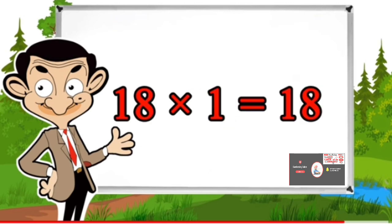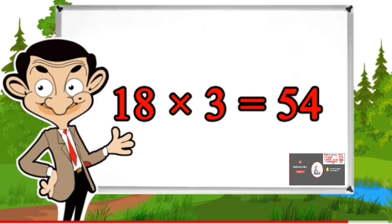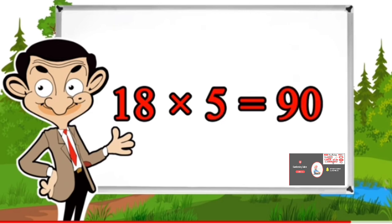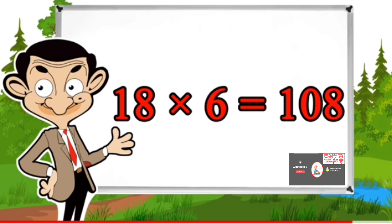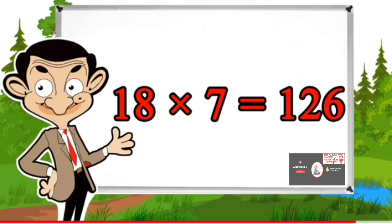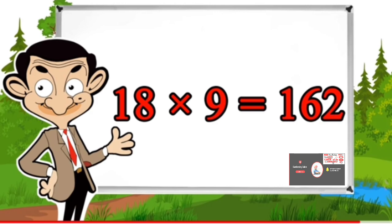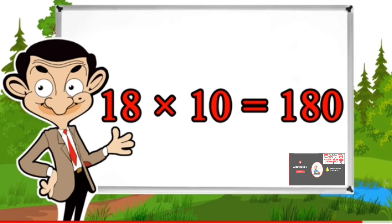Table of 18: 18×1=18, 18×2=36, 18×3=54, 18×4=72, 18×5=90, 18×6=108, 18×7=126, 18×8=144, 18×9=162, 18×10=180.